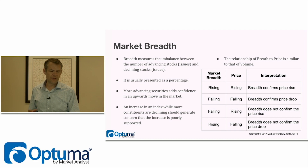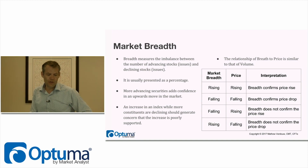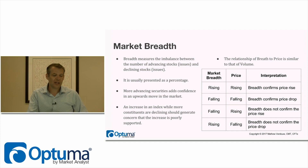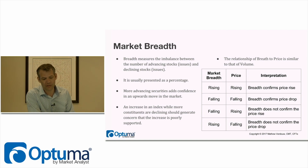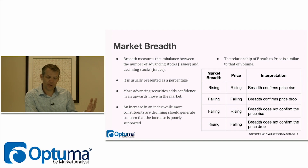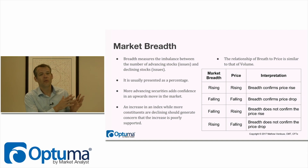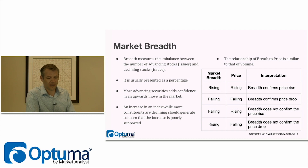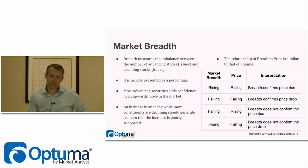This relationship is often presented as a percentage, and we're looking for divergences. An increase in the index while more constituents are declining should generate concern that the increase is poorly supported. When breadth is rising and price is rising, breadth confirms the price rise. When breadth is falling and price is falling, breadth confirms the price drop. But when breadth is falling while price is rising, you have negative divergence — breadth does not support what's happening in the index price.